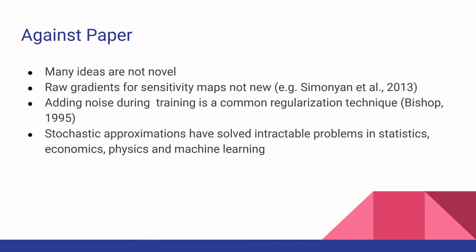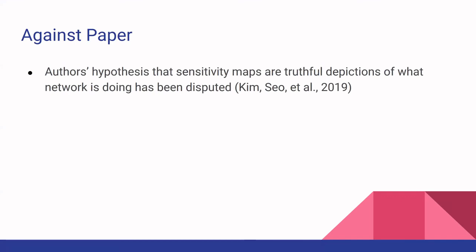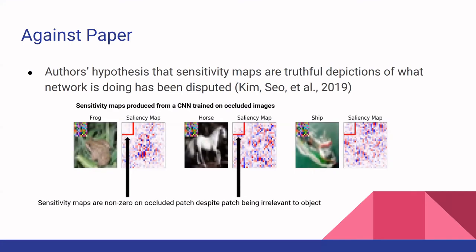In stochastic gradient descent, instead of doing a full gradient descent optimization on the entire dataset, they estimate the gradient descent on sub-samples of the dataset, enabling gradient descent for large datasets. So stochastic approximations are not new. Another weakness was that the authors hypothesized that sensitivity maps are truthful depictions of what the network is doing, but later papers have disputed this idea.